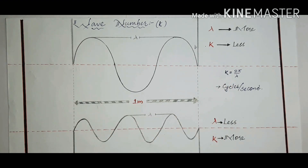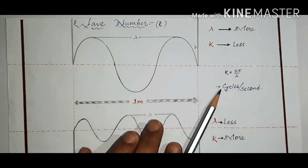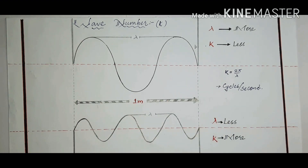Wave number and wavelength are inversely proportional to each other, and wave number is measured in cycles per unit distance.